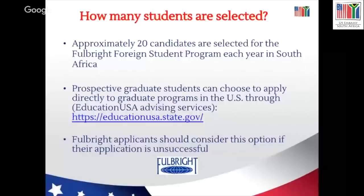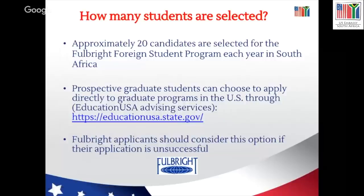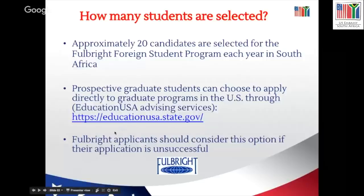Approximately 20 candidates are selected for the Fulbright program each year throughout South Africa. If you are not successful, you can choose to apply directly to graduate programs in the US through our EducationUSA advising centers — click on educationusa.state.gov and follow the link to the center closest to you. Counselors and advisors will give you free information on different institutions, access to resource books, and possibly funding sources you can access on your own.